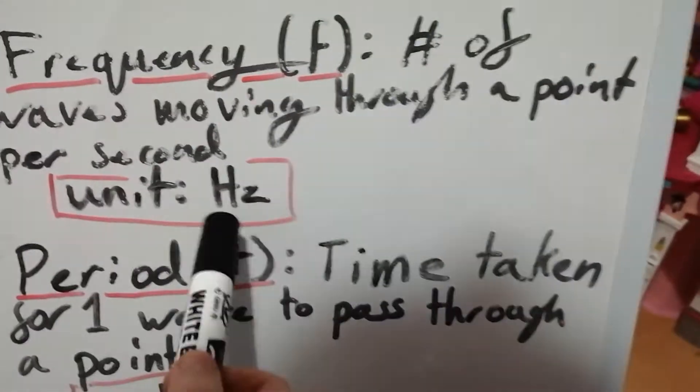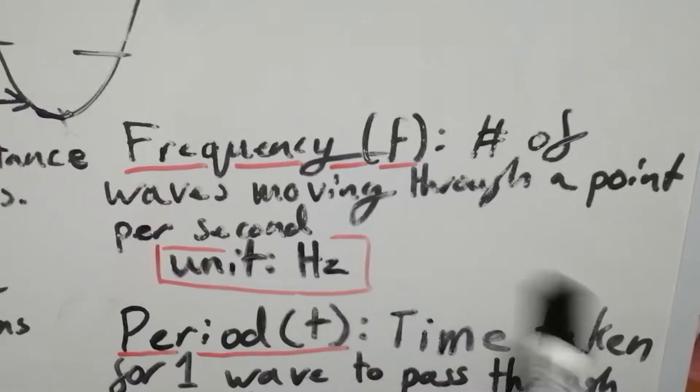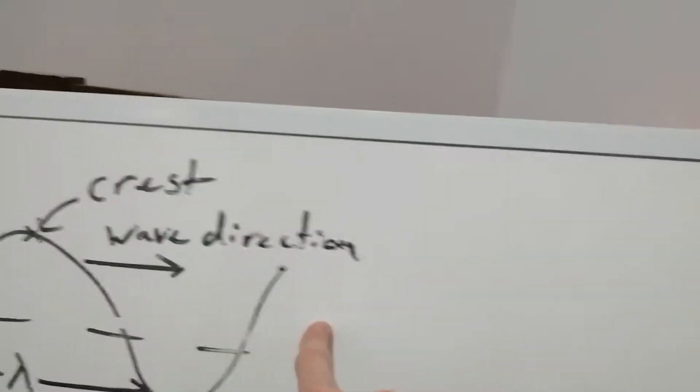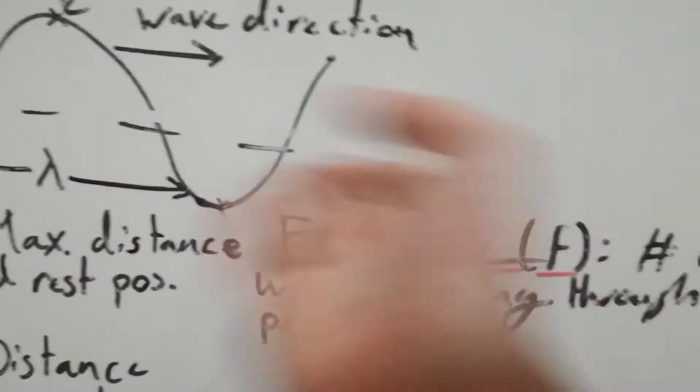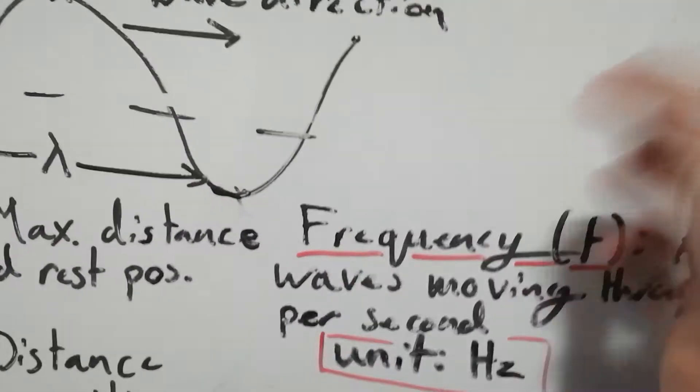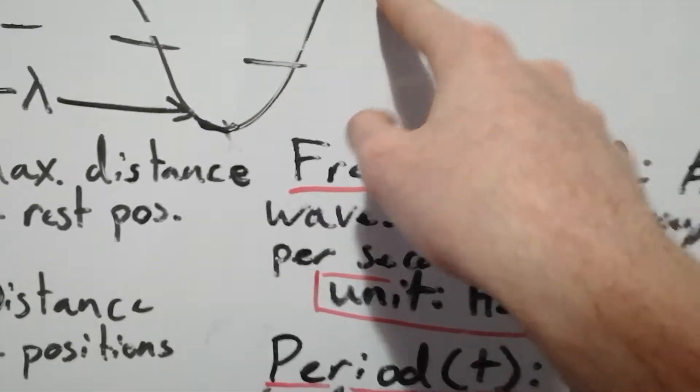Frequency is measured in Hertz and that's the number of waves moving through a point per second. If I have a point here and I just let the wave move, whatever speed it's moving at, we count within one second how many waves pass through.